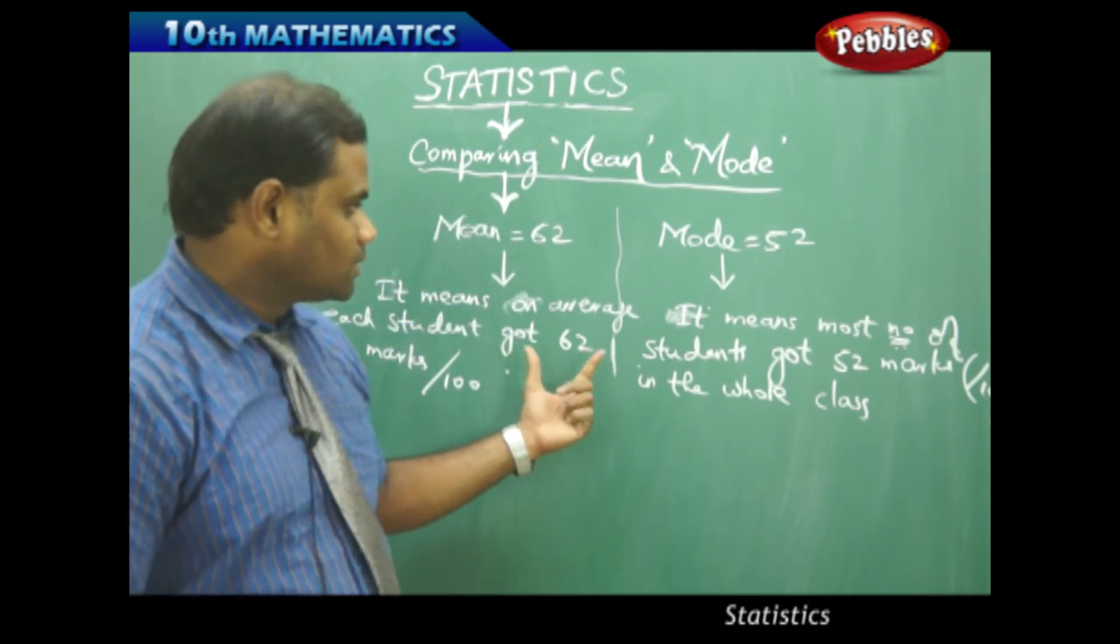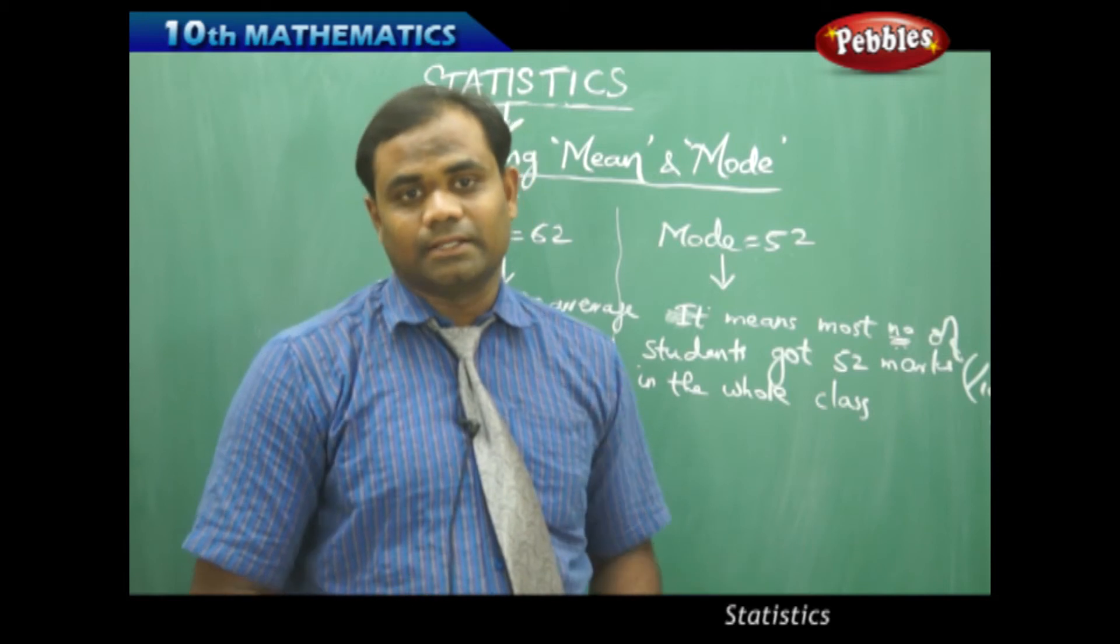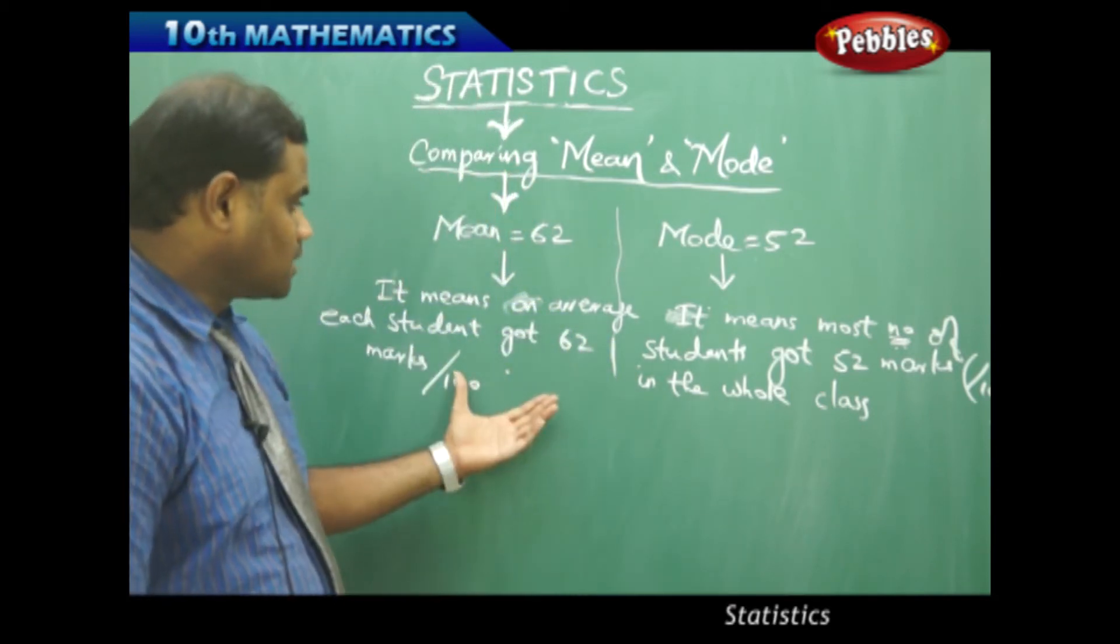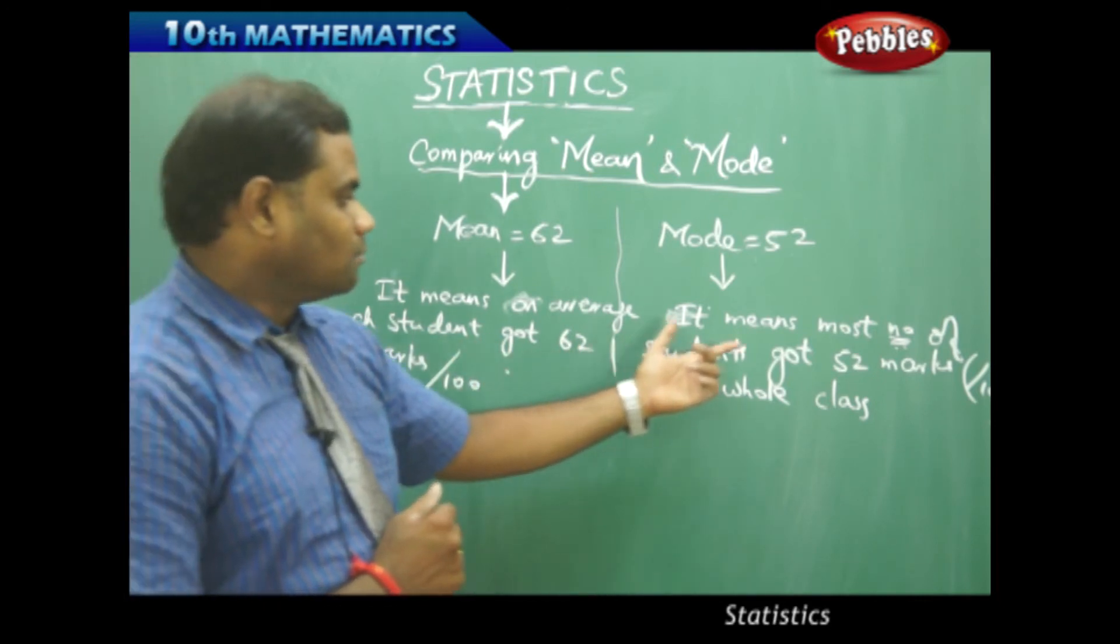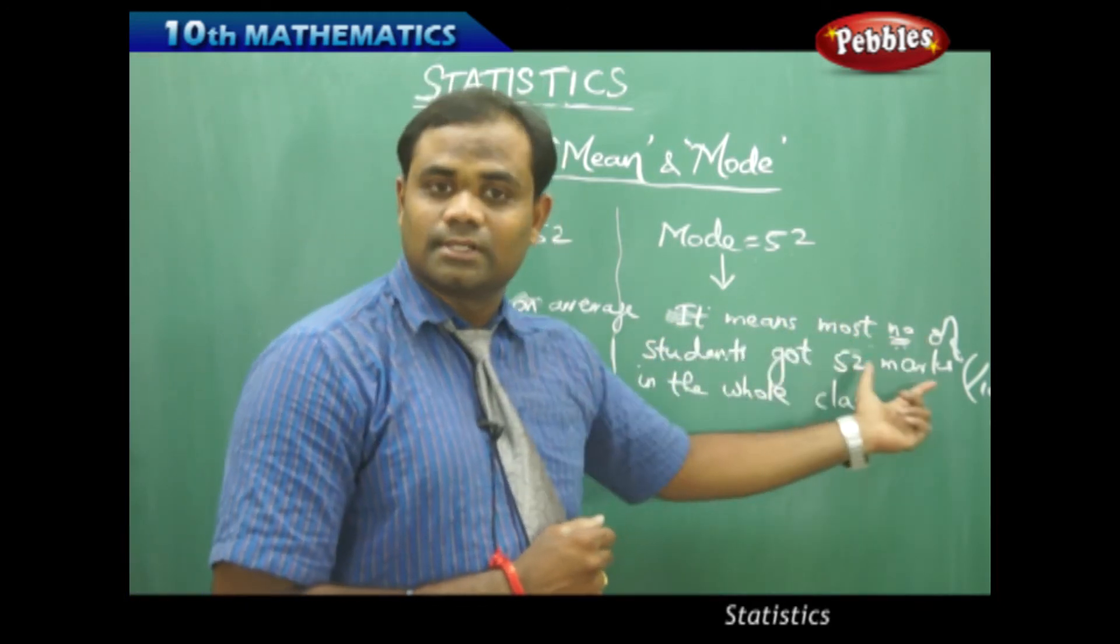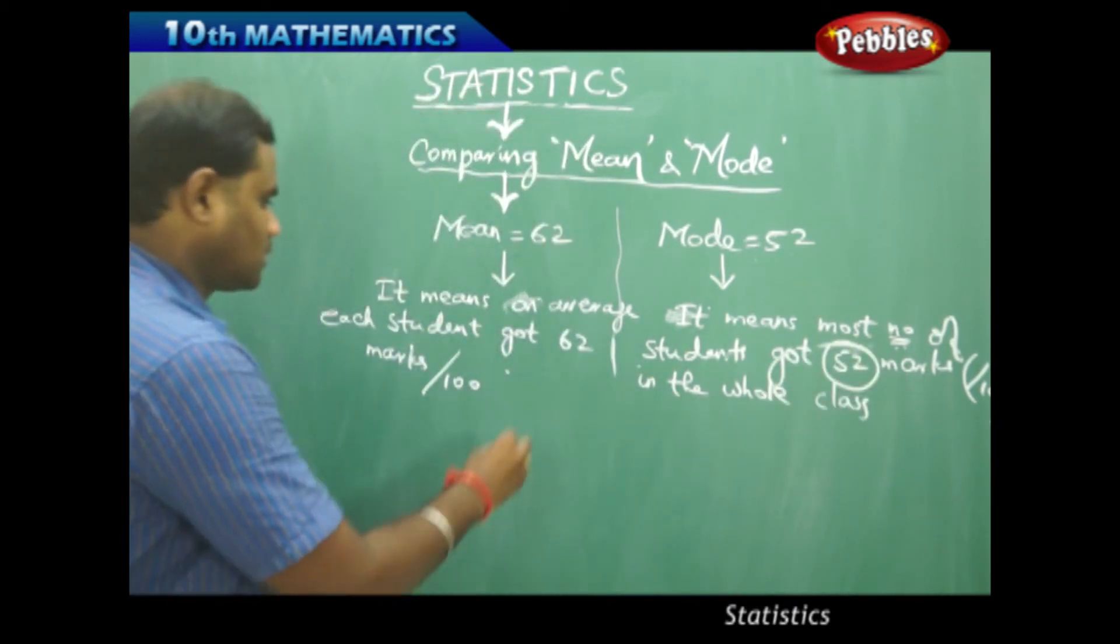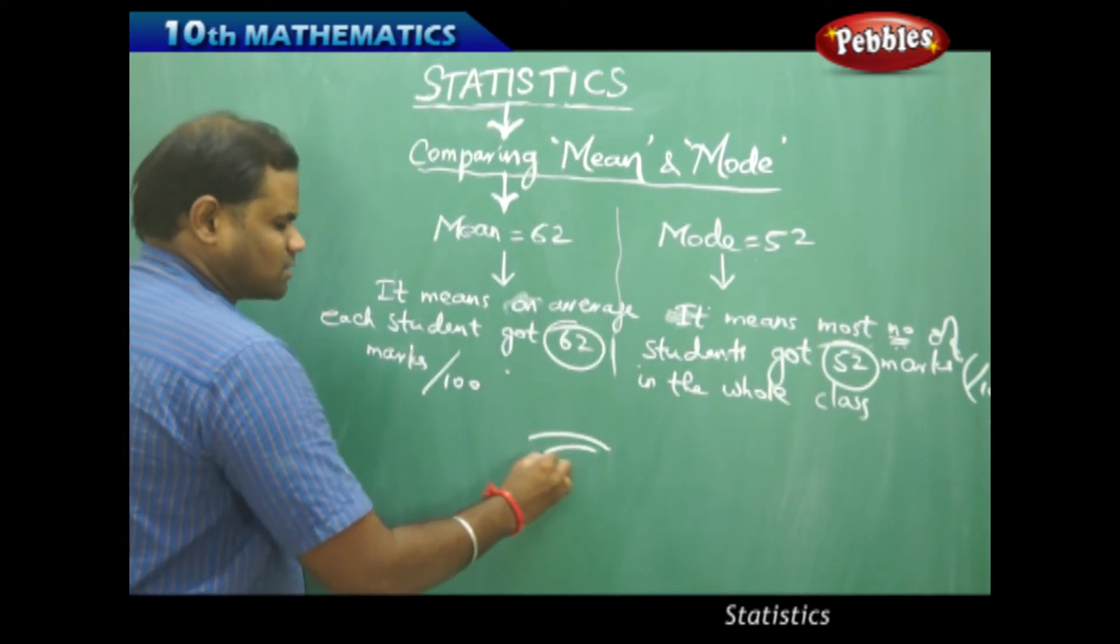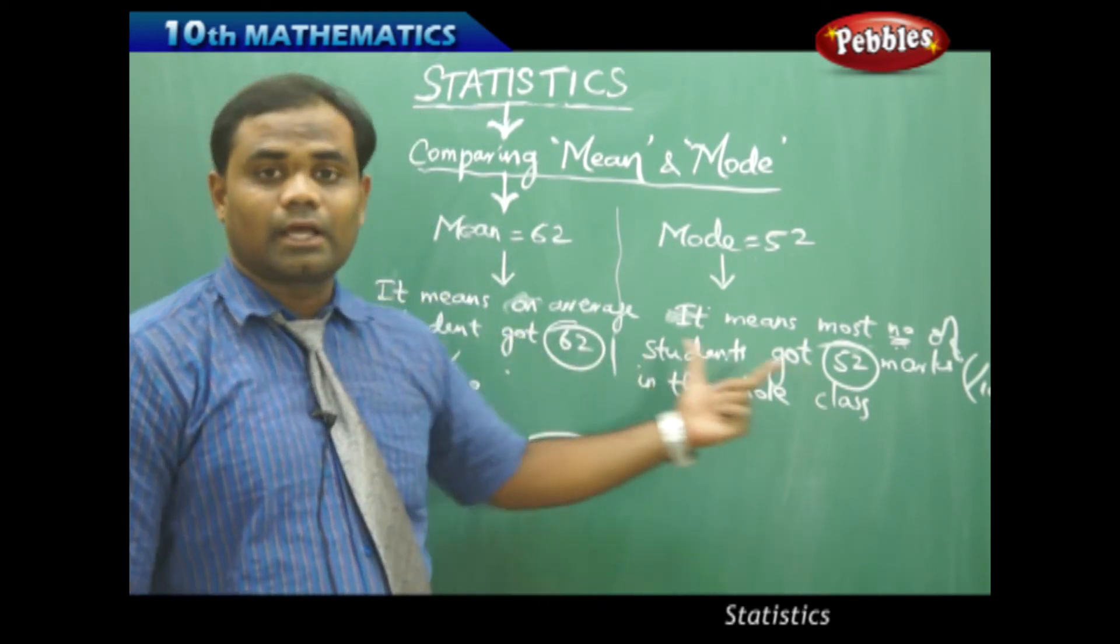Therefore, each of the definitions of mean and mode have their own respective understandings as seen in this example. So mean is average of each student and mode is most number of students getting that particular marks. Here mode is 52 and mean is 62.